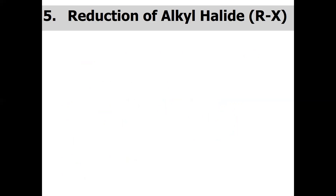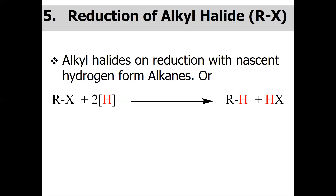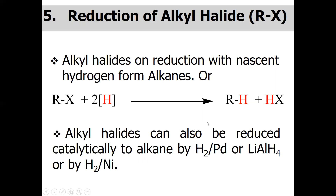The fifth method by which alkane can be synthesized is reduction of alkyl halide. Alkyl halides on reduction with nascent hydrogen form alkane. Nascent hydrogen means atomic hydrogen, which can be obtained by reaction of HCl with zinc, or reaction of zinc with acetic acid, or reaction of zinc-copper in ethanol, or reaction of hydrogen iodide with red phosphorus. When this nascent hydrogen reacts with the alkyl halide, it gives the corresponding alkane and hydrogen halide. Alternatively, alkyl halides can also be reduced catalytically to alkane by hydrogen with lithium aluminum hydride or hydrogen in the presence of nickel.